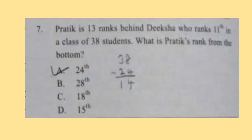Question 7: Pratik is 13 ranks behind Diksha, who ranks 11th in a class of 38 students. What is Pratik's rank from the bottom? Diksha is 11th and Pratik is 13 ranks behind, so that means he is 24th from the top. There are 38 students, so from the bottom Pratik's rank will be 15th. Option D is the correct answer.